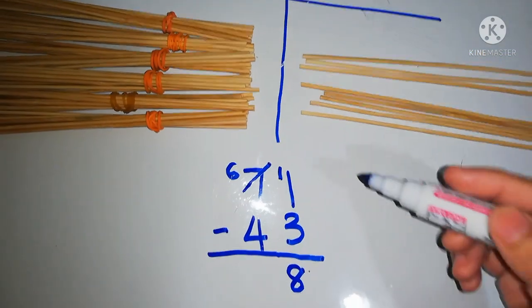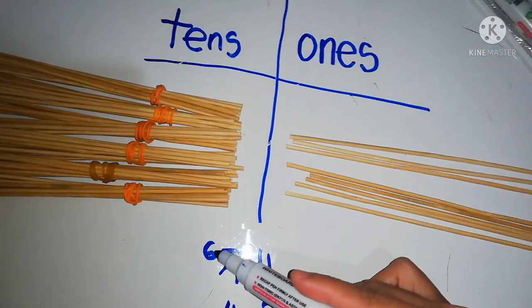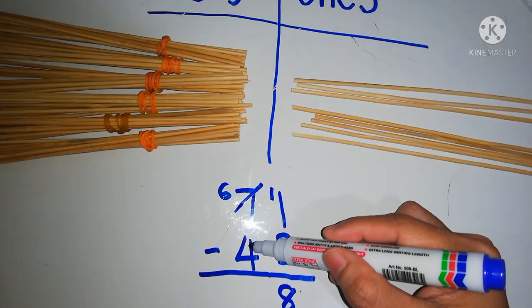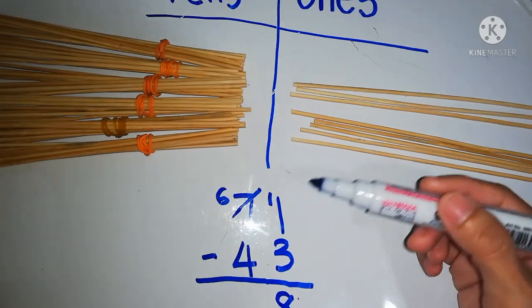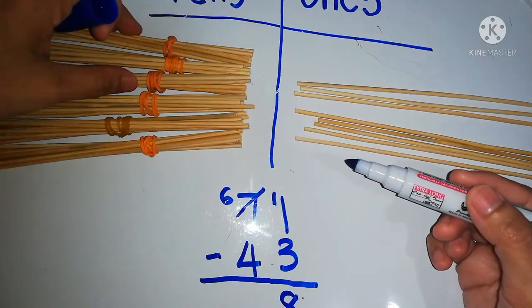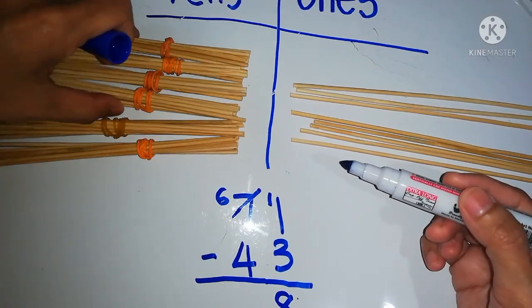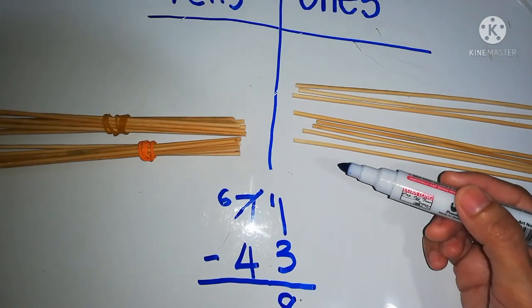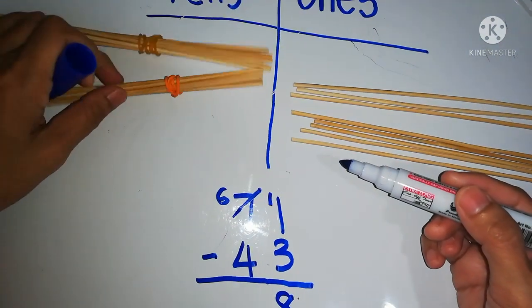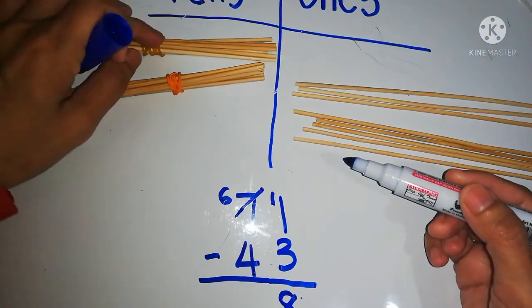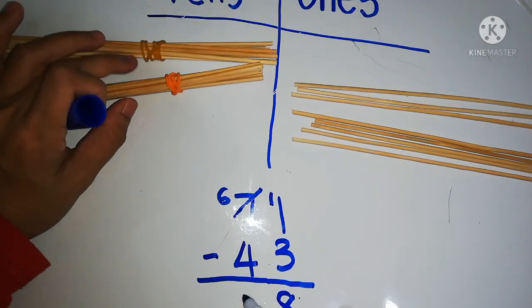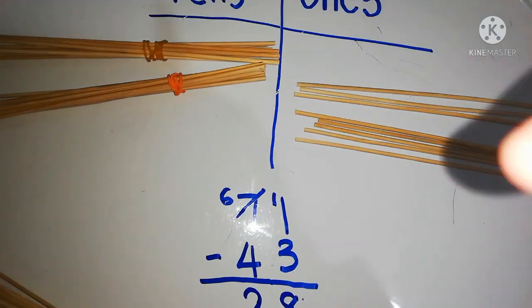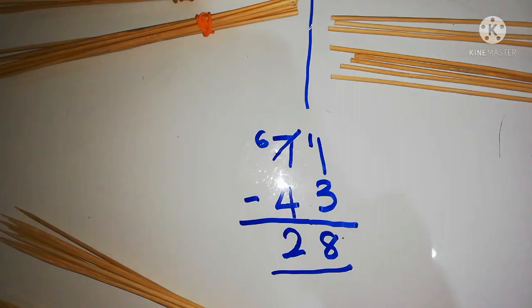And we have 60 minus 40: 1, 2, 3, 4. That's 40. So we have left 20 — 2 tens, 20. So the total answer is 28.